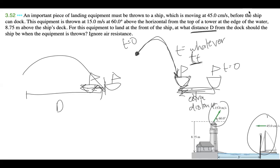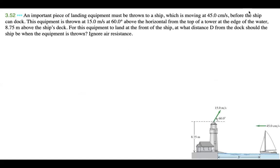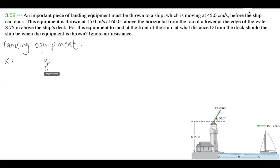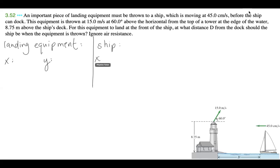Now that we understand the problem, let's write down all of our knowns and unknowns. We can do that by writing down all of our knowns for the landing equipment and then all of our knowns for the ship. For the landing equipment we have x and y components. And then we also have our ship, which only has x — it's not moving up and down, only in the horizontal direction.